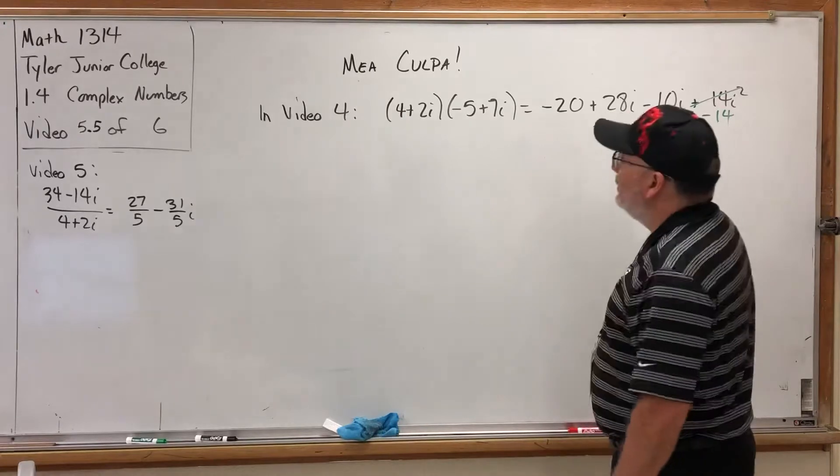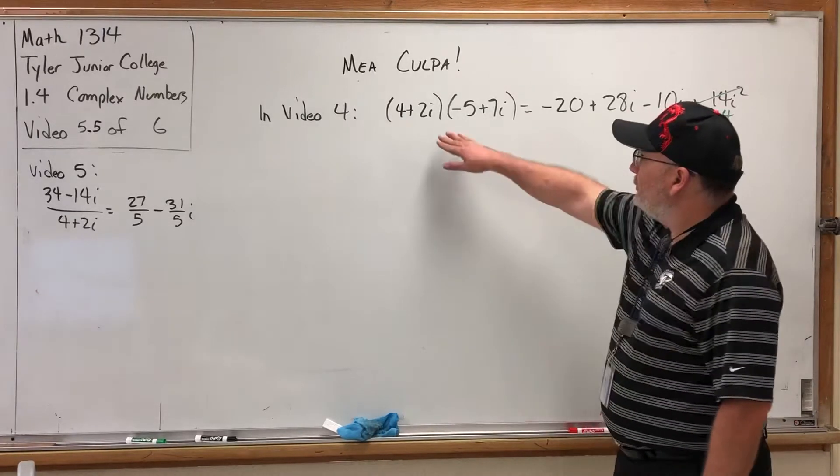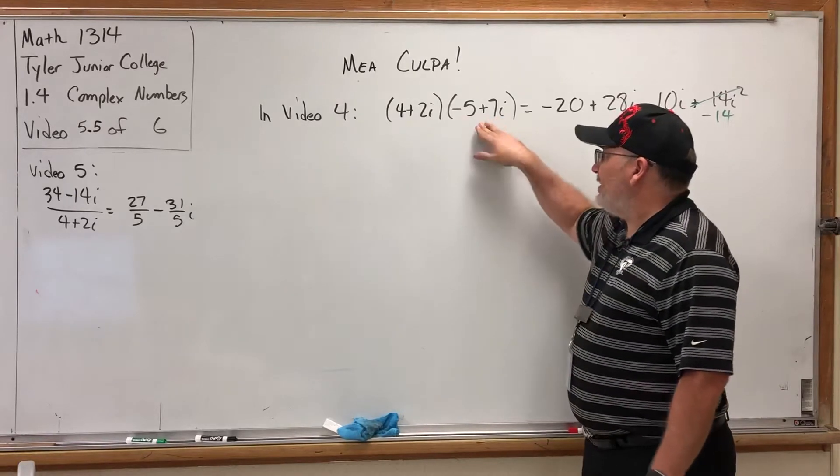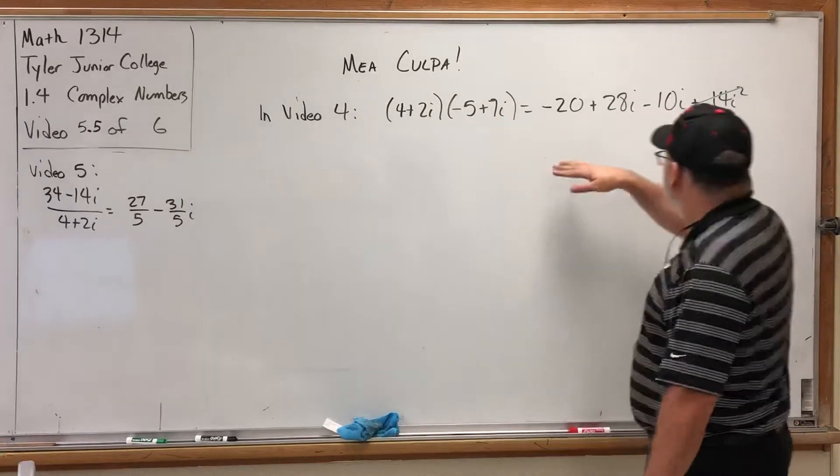And it was in video 4 where the mistake was made. You were probably screaming at it. The second multiplication example was 4 + 2i times -5 + 7i.